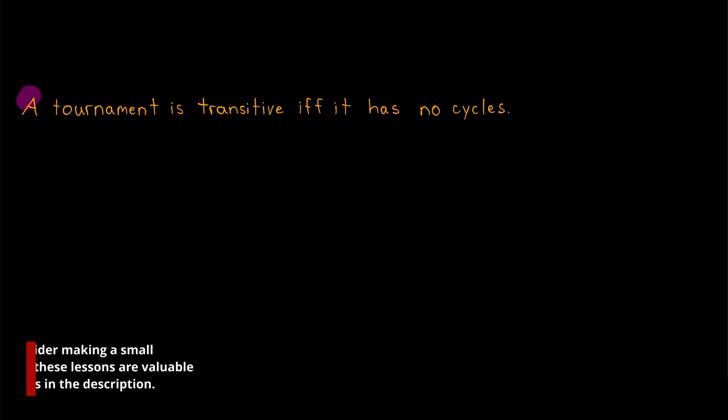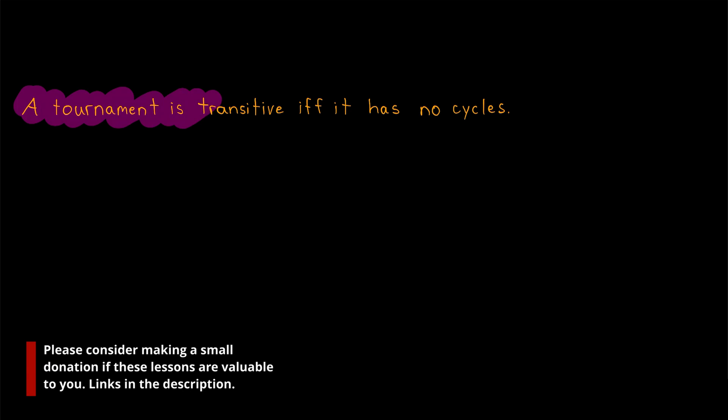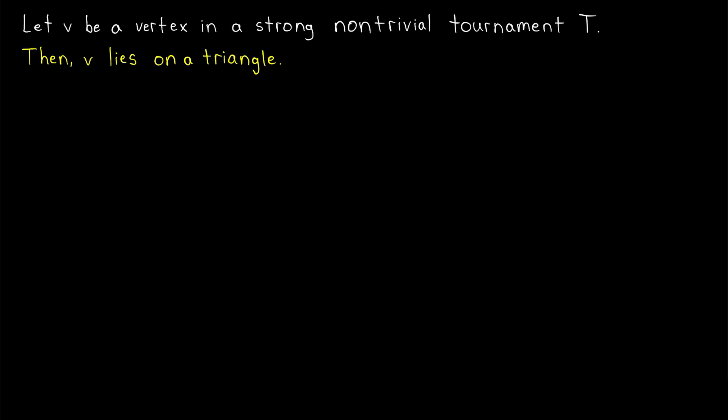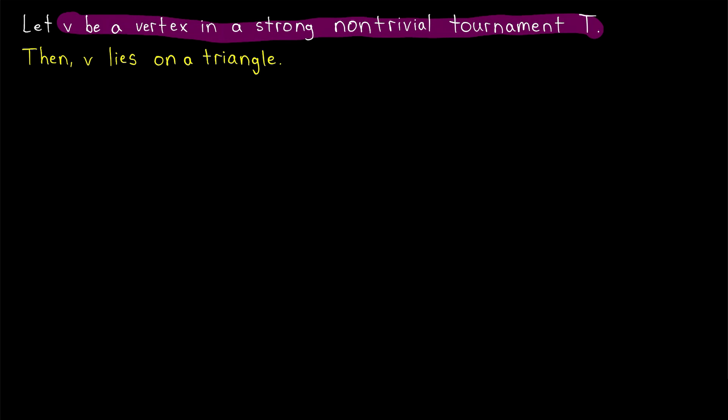In a previous lesson, we proved that a tournament is transitive if and only if it has no cycles. And I'll leave a link to that lesson in the description. So transitive tournaments don't have any cycles, but what about other types of tournaments? For example, what about strongly connected tournaments? Well, it turns out, as we'll be proving today, that every vertex of a strong,